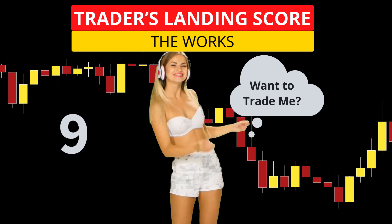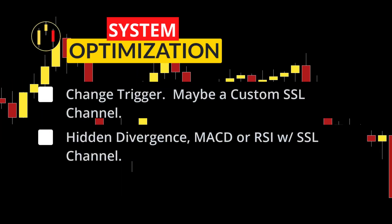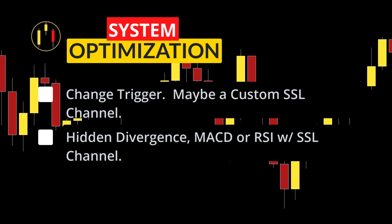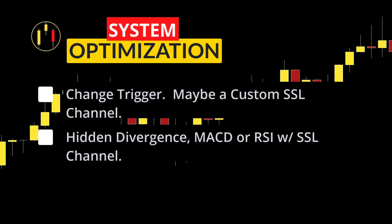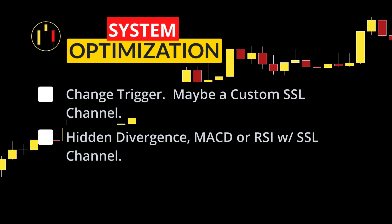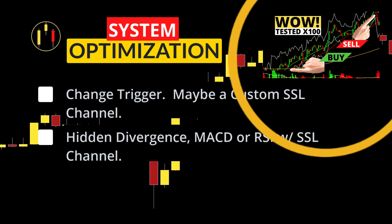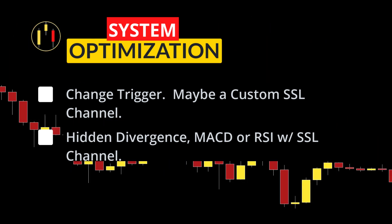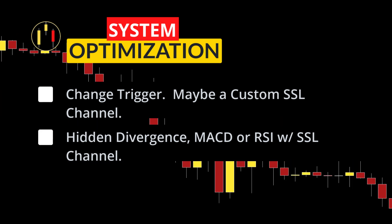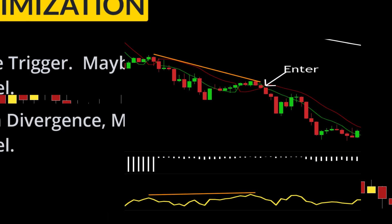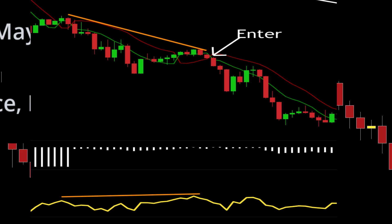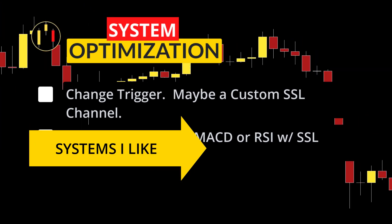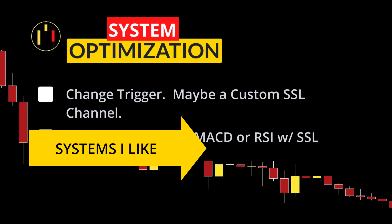There is much potential to increase gains with more optimization and testing. The enemy of great is good — so how do we find the crumbs and make this system better? First, I'd like to see what happens when we change the trigger from the two stochastic indicators to one SSL channel — maybe a custom SSL channel — as it may make for a simpler entry method. There were definitely good trades missed because both stochastics were in the extreme regions. The second thing you can add is hidden divergence using a MACD or an RSI. Check out this playlist for more profitable systems and have a great day.